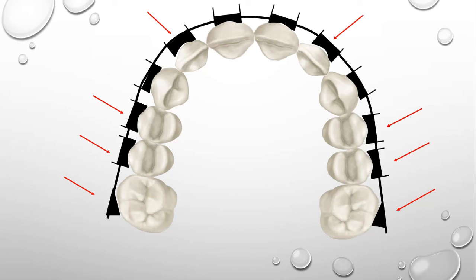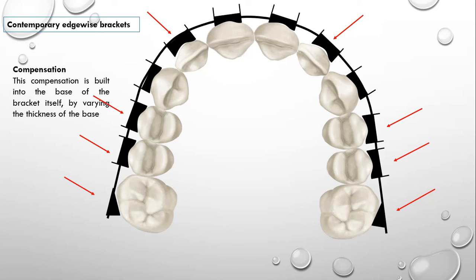So, the contemporary edgewise brackets, how first order bends are compensated? This compensation is built into the base of the bracket itself by varying the thickness of the base.